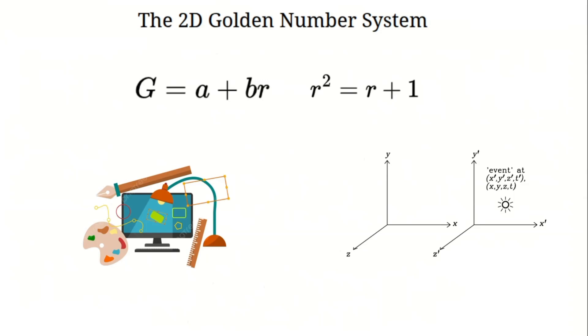We've cracked the 2D golden number system. From R squared equals R plus 1, we calculated powers, added, multiplied, conjugated, found moduli, divided, and transformed with matrices. This algebra, with its hyperbolas and shears, opens doors to new math worlds.